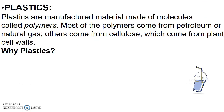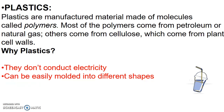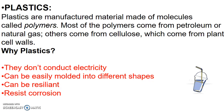Plastics are manufactured materials made of molecules called polymers. Most polymers come from petroleum or natural gas; others come from cellulose from plant cell walls. We use plastics because they don't conduct electricity, can be easily molded into different shapes, can be resilient and resist wear and tear, resist corrosion and will not rust, are recyclable — they can be melted at high heat as thermoplastics and reshaped — and they are not expensive.